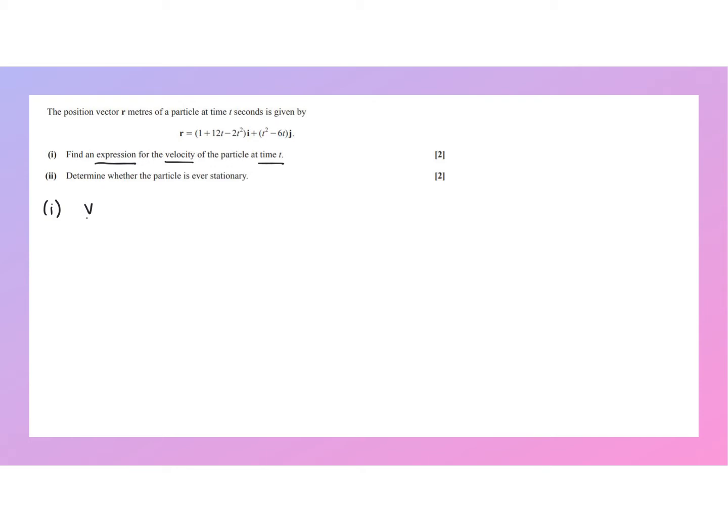So remember that the velocity vector can be found by differentiating the displacement vector, or the position vector, at time t with respect to t, and we need to differentiate the i component and the j component separately.